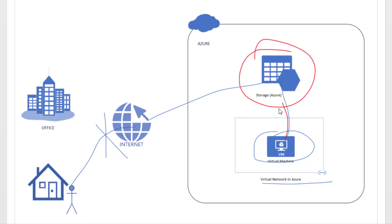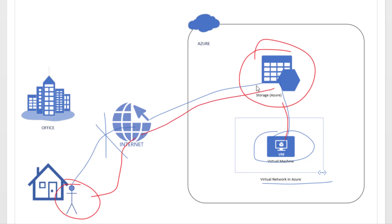If you do not want to configure the firewall for the whole network, you can configure it for a set of IP addresses. That way, when this person tries to connect to the storage account, the connection will go over the internet, but because the firewall says so, he will be able to connect to the storage account. Let's jump into the Azure portal and look at this scenario from a practical perspective.